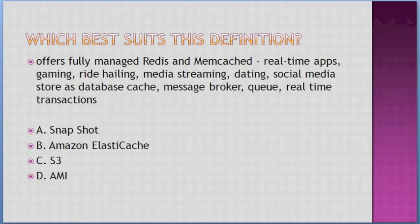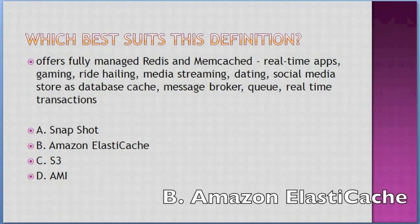Which best suits this definition? 'Offers fully managed Redis and Memcached; real-time apps, gaming, ride-hailing, media streaming, dating, social media; store as database cache, message broker queue, real-time transactions.' Options: A. Snapshot, B. Amazon ElastiCache, C. S3, D. AMI. Answer: B — Amazon ElastiCache.